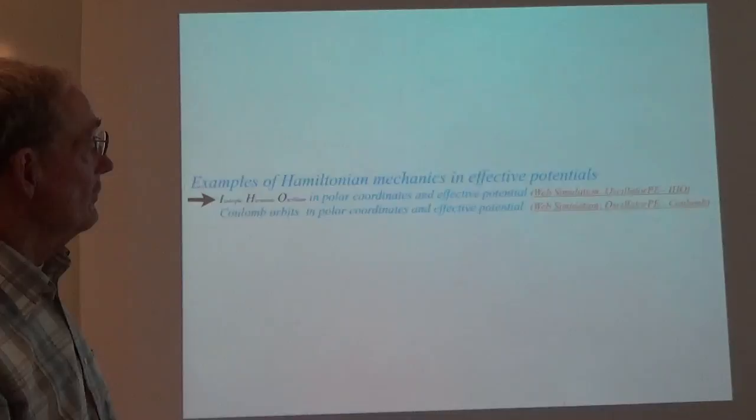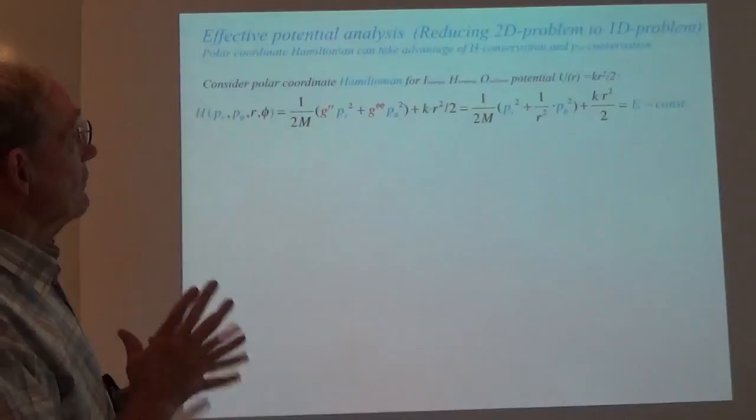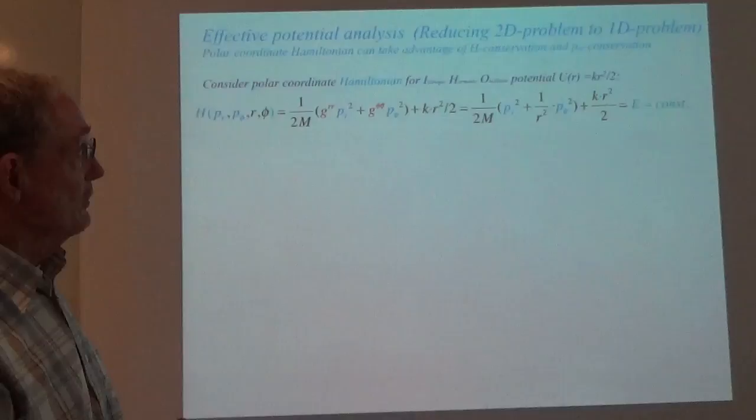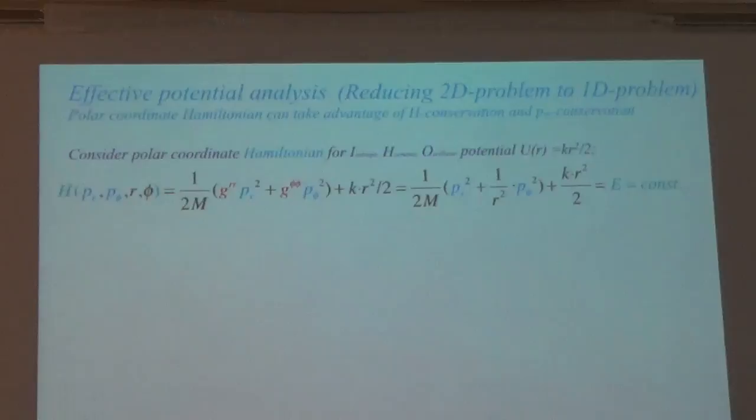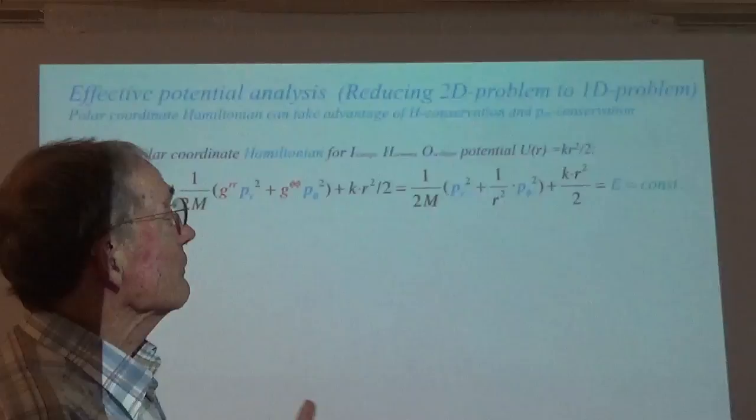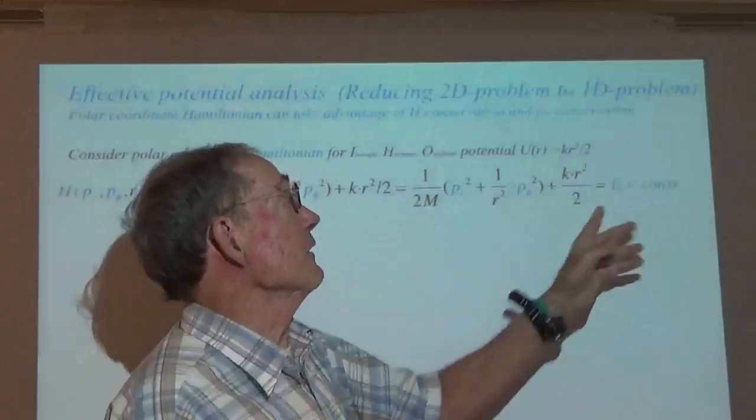Here's where Hamilton shines — with anything that has to do with conservation or symmetry. We're going to consider first the isotropic harmonic oscillator, the sophomore physics inside-the-Earth potential. We're going to let the Hamiltonian do something for us. As I've already said, the Hamiltonian is the total energy. And if you know that the energy is constant, then this is a constant of motion.